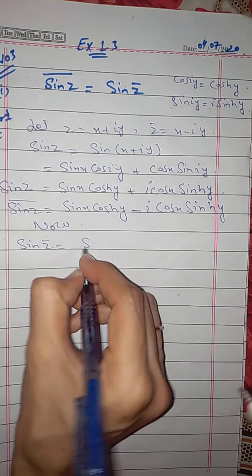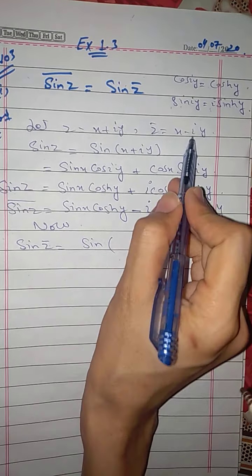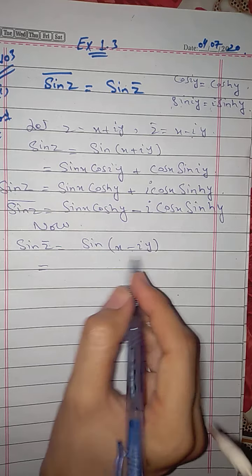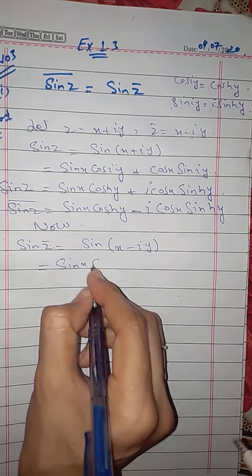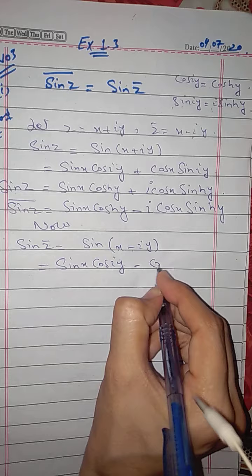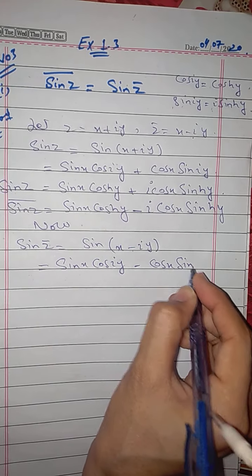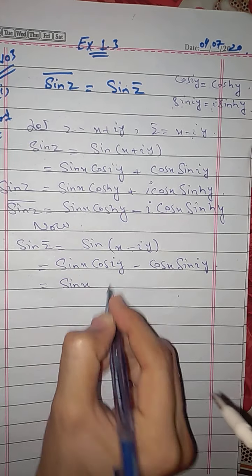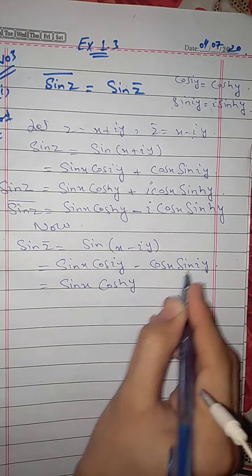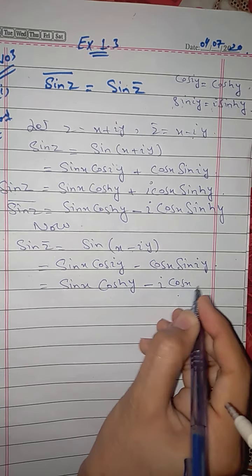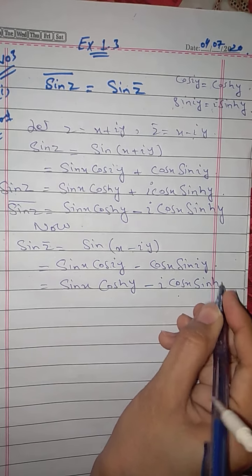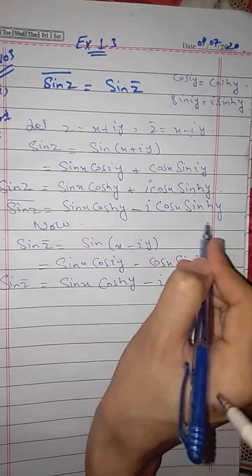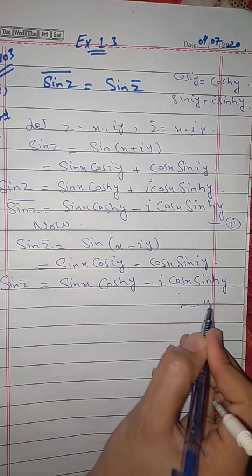Now sin(z conjugate) means we put z̄ = x − iy into the sine function. Opening it the same way, since there is minus, the formula gives: sin x · cos(iy) − cos x · sin(iy). Converting to hyperbolic form the same way: sin x · cosh(y) − i · cos x · sinh(y). Now compare this with equation one — they are equal. Call this equation two.